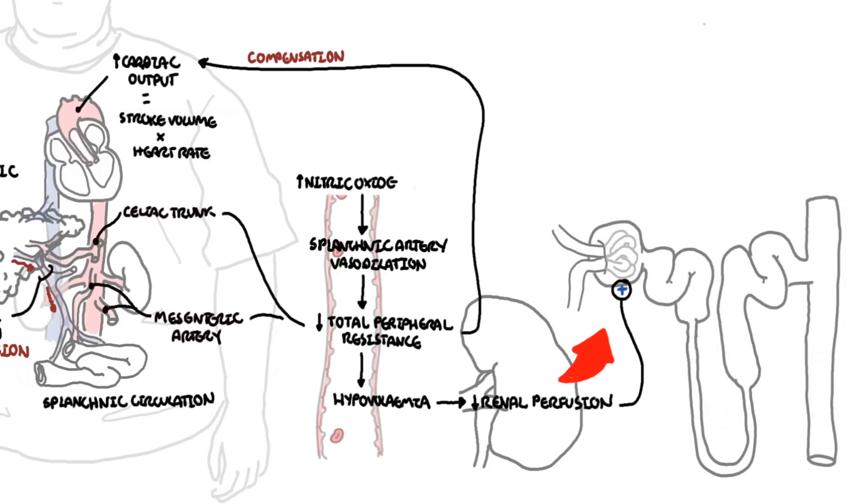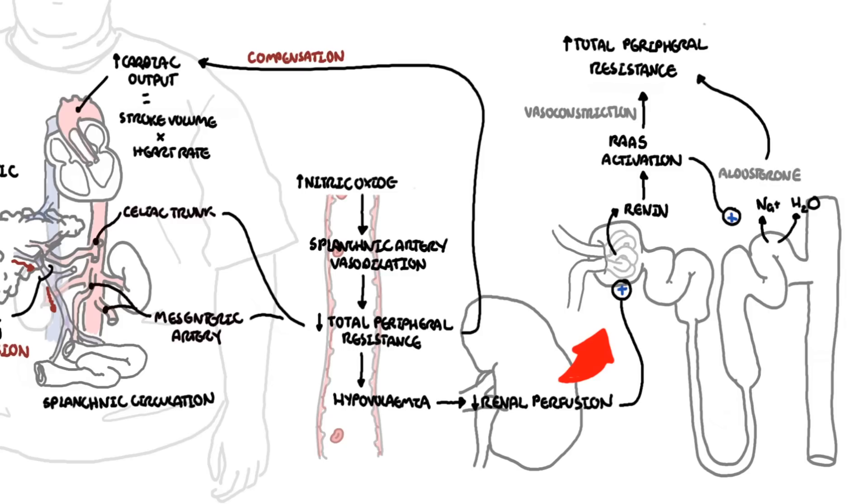The kidneys react by activating the renin-angiotensin-aldosterone system, which will increase cardiac output and will try to increase systemic vascular resistance via angiotensin-2 direct action on the blood vessels and by aldosterone's action on the kidneys, increasing sodium retention and thereby reducing sodium excretion.